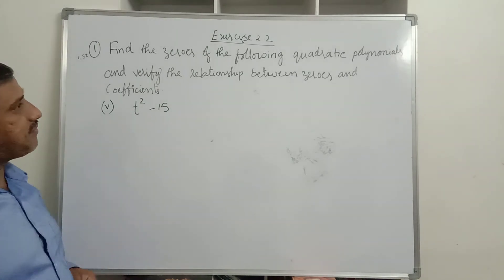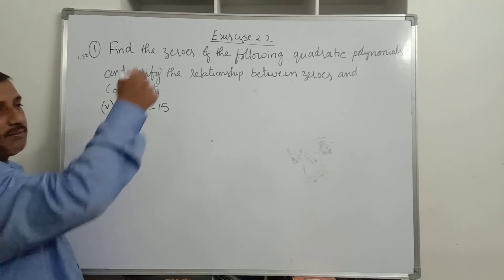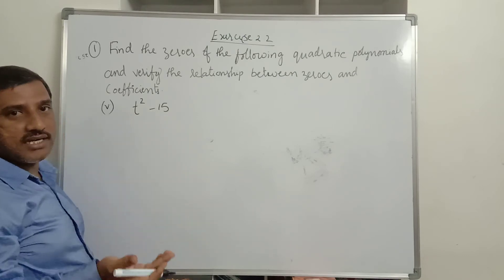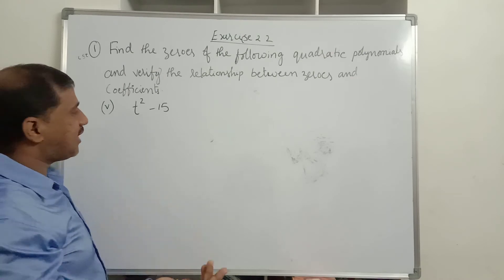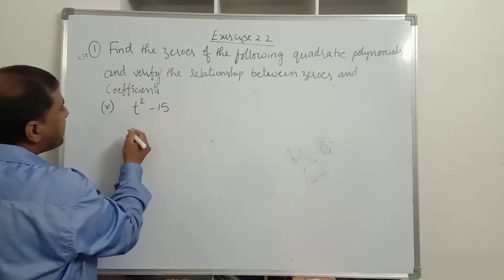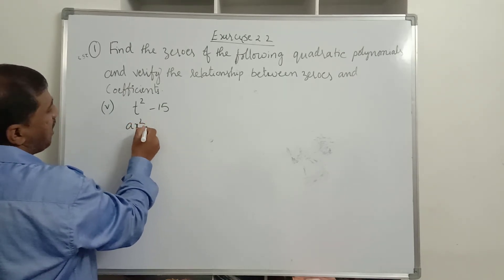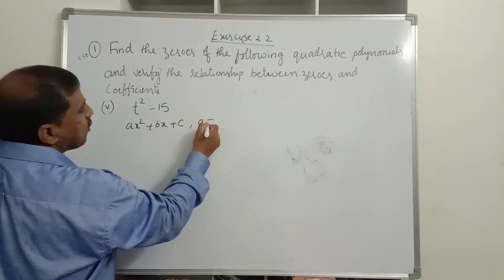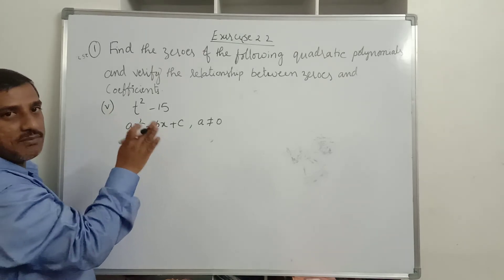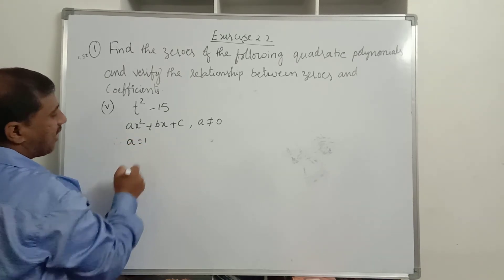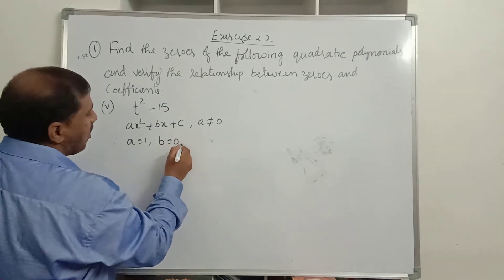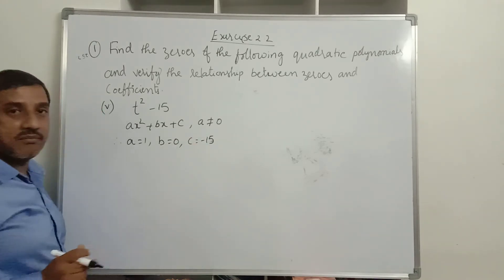We will now discuss the fifth sum: T² − 15. There is no middle term here — only the T² term and the constant. When comparing with AT² + BT + C: A = 1, B = 0 (no T term), and C = −15.